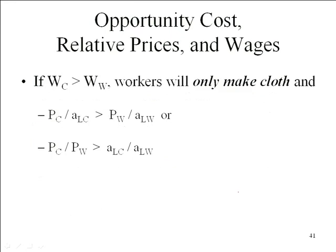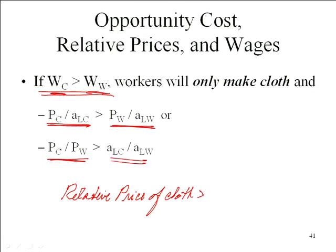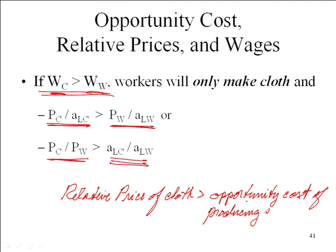Let's suppose for the moment that the wage rate in the cloth industry is higher than the wage rate in the wine industry. Remember, when we have one factor of production it's workers, and workers are freely and costlessly mobile between industries — this is true for both countries. So if the wage rate in cloth is higher than in wine, we can transform that into the relative price of cloth exceeding the opportunity cost of producing cloth — the ratio of labor requirements. If the price you can get for cloth exceeds the opportunity cost, all you want to do is produce cloth. Workers move to the cloth industry because it's paying a higher wage.